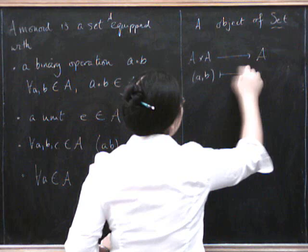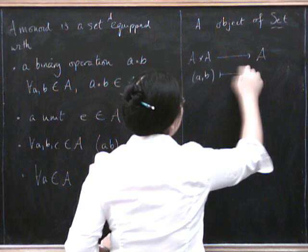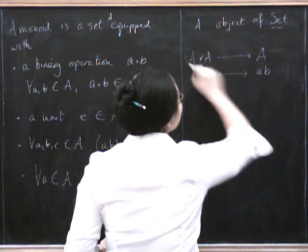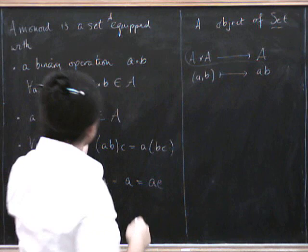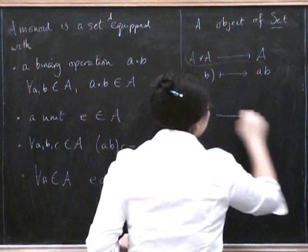a function from A cross A to A. So here we define it as something that takes the pair A, B, and goes to A multiplied by B. But fundamentally, it's just a function A cross A to A.